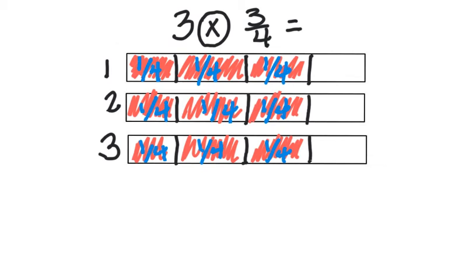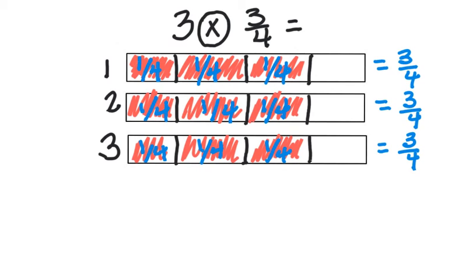In the previous slide we saw that we could add up unit fractions. However, we have several one fourths and it would not be effective to add these up. We learned in fifth grade that multiplication is more efficient than repeated addition. So we have three groups of three fourths, and to connect it to multiplication, we're going to write a fraction sentence: three fourths, three fourths, and three fourths.